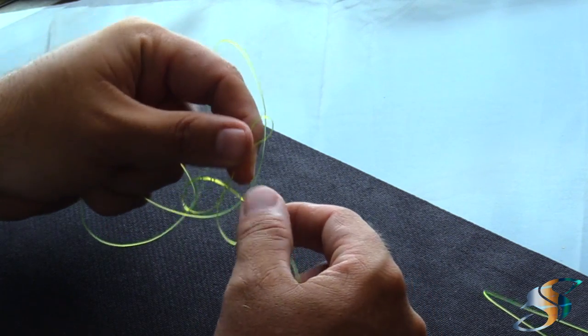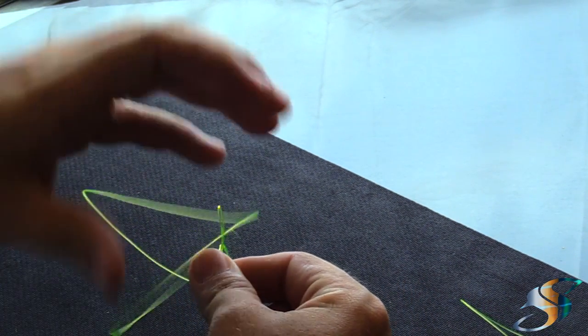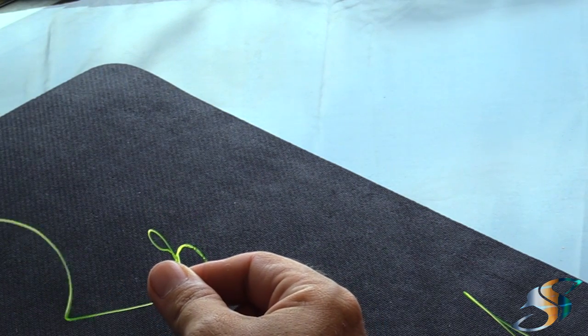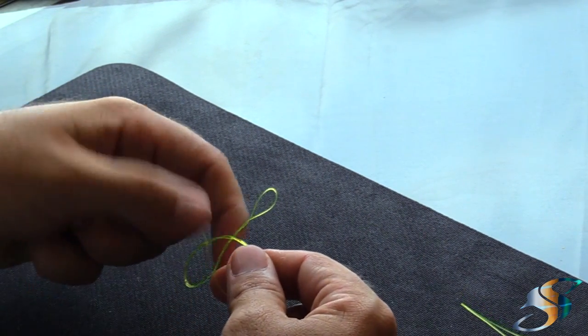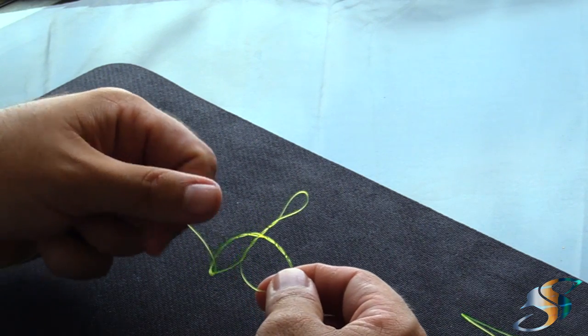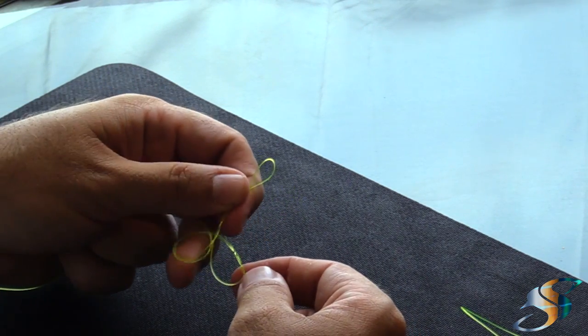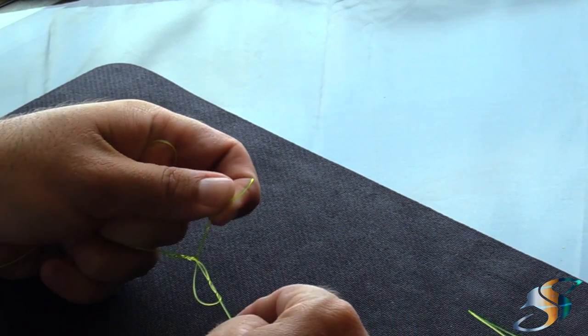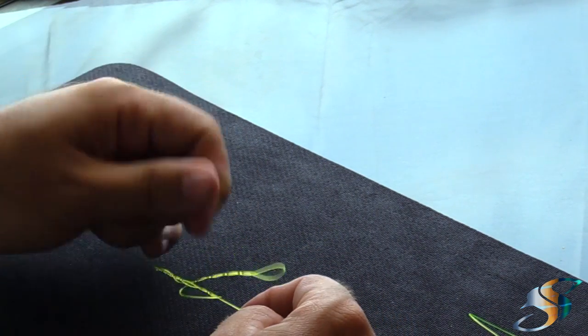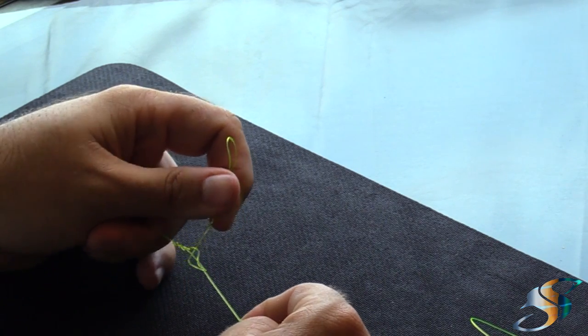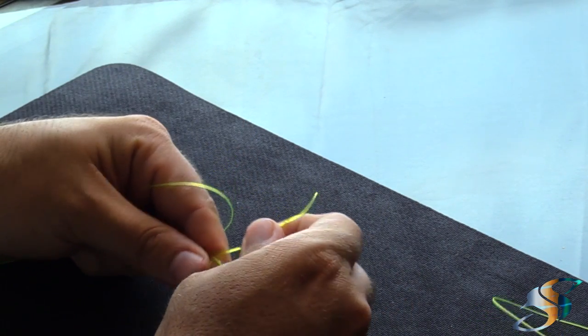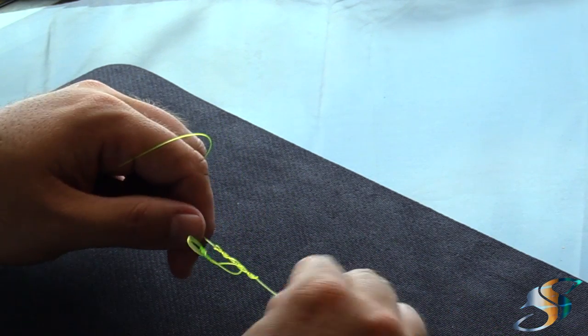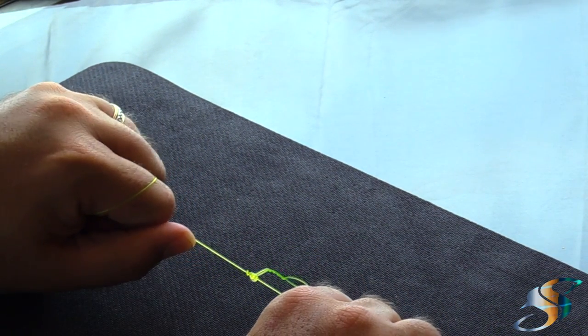Now what you want to do—don't mind this tag end, it keeps coming back in the frame here—it should be right here. Now start to pull this tight. Pull both of your tag ends and the loop, and what you want to do is use a little saliva and you can pull your knot tight.